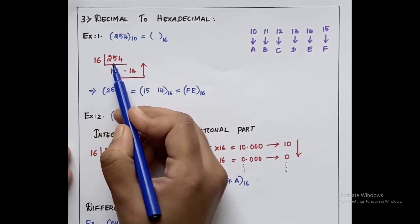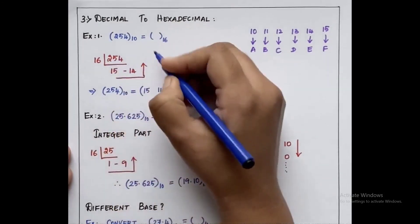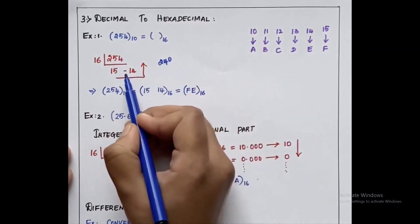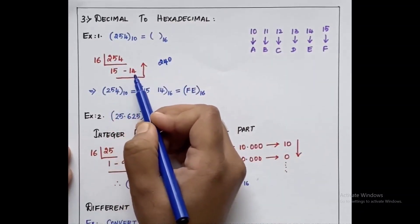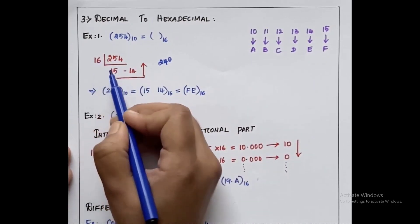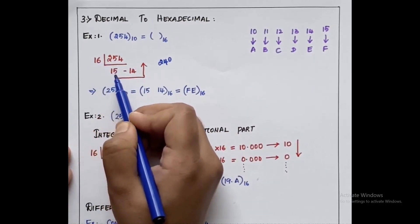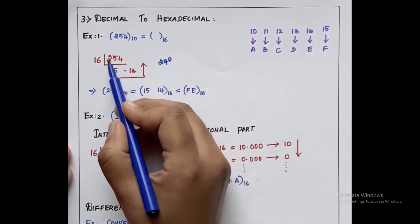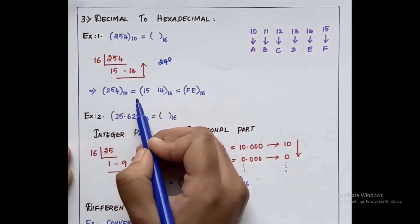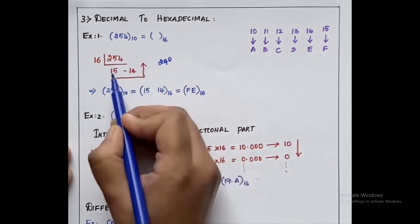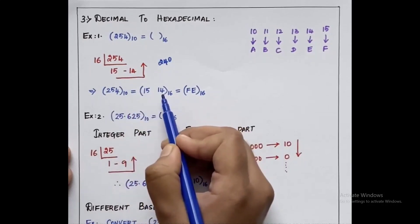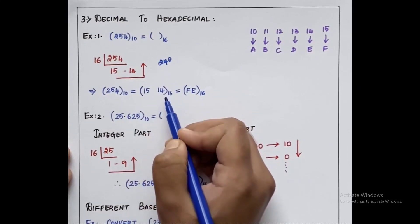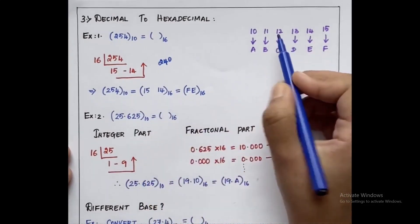16 into 15 will be 240, so the remainder will be 14. Now we have to draw the arrow mark from the last value, which is 15, moving upwards. Following the arrow mark, let us write the equivalent hexadecimal value for 254 — the first number is 15 and the second number is 14.